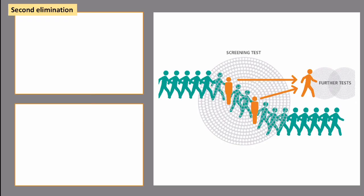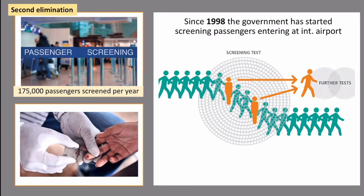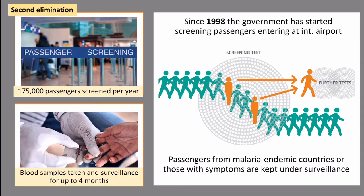This was relatively successful, and further measures were added. By 1998, the government began screening passengers entering the country — people are selected and screened on arrival. Nearly 170,000 people are screened every year. If people come from malaria-endemic countries or have symptoms on arrival, they are kept under surveillance for a significant period of time, with blood samples taken and monitoring continuing for up to four months. These systems, again led by the government as a top-down approach, have very significantly reduced malaria.